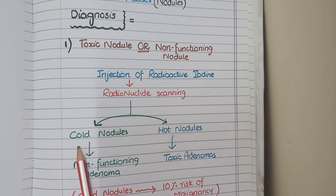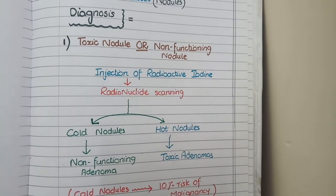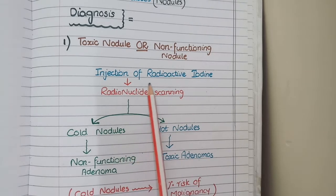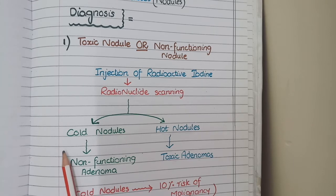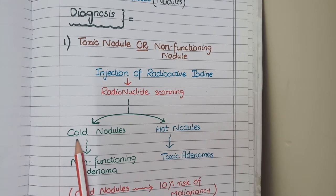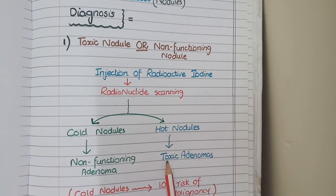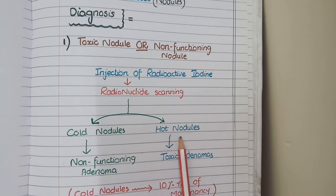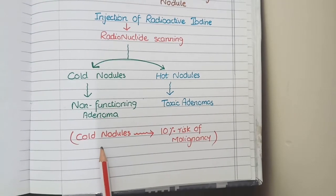In a thyroid scan, nodules appear as either cold or hot nodules. We inject the patient with radioactive iodine and perform the scan. If a nodule's cells do not make thyroid hormone, they will not absorb iodine and will not be prominent on the scan — these are cold nodules. If cells make a lot of thyroid hormone, they absorb more radioactive iodine and appear very prominent — these are hot nodules. Most follicular adenomas are cold nodules.